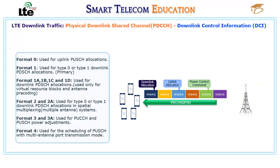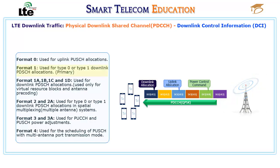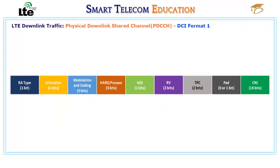Format 4 is used for the scheduling of PUSCH with multi-antenna port transmission mode. For downlink data transmission, Format 1 is used. The structure of DCI Format 1 is described as follows.